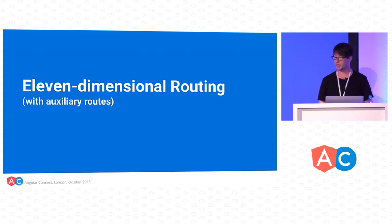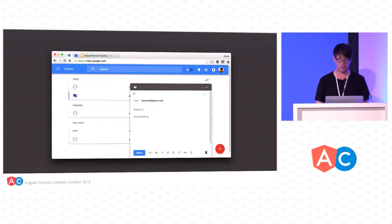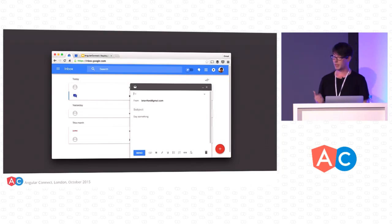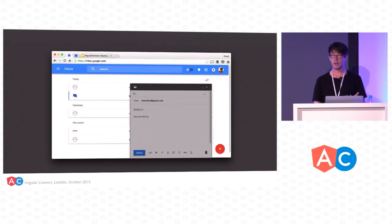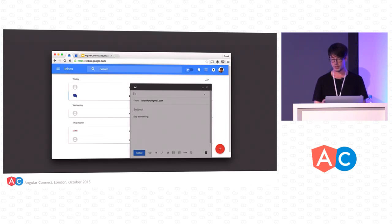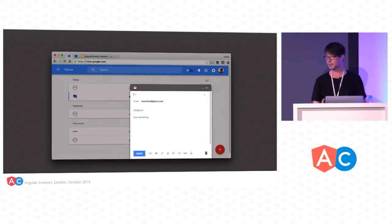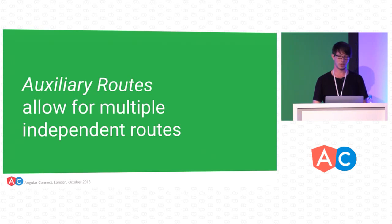Now we can get to the interesting and tricky stuff: 11-dimensional routing. Let's say we want to implement something like a compose view in our email app. This is a great experience for the user — they can navigate separately in the background between search and detail, maybe looking up a flight number or tracking code. We also want to have this compose view in the front with its own independent routing. That's what auxiliary routes let you do — they allow for multiple independent routes to be active at the same time, and you can navigate between them independently.